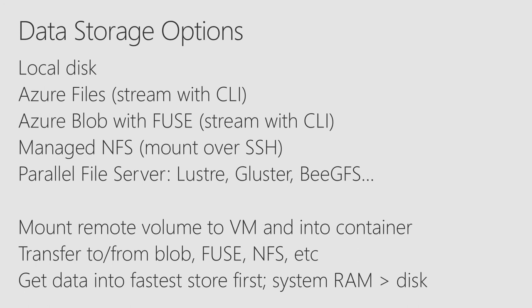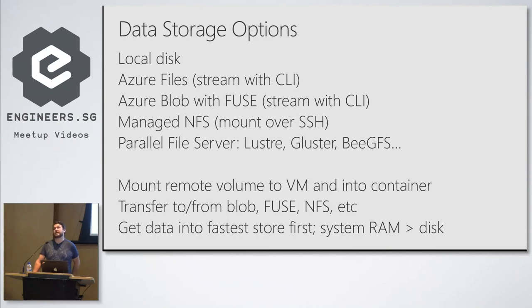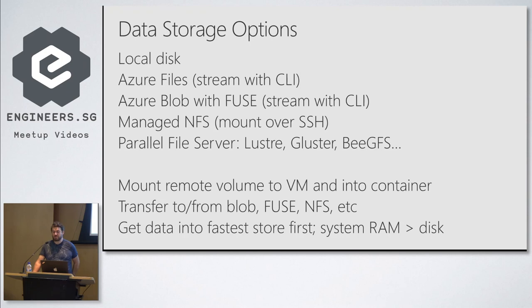I'm a big fan of getting data into the fastest data store first. If I'm training a deep learning model, I am not going to read mini-batches over the network — all you're going to do is choke on file IO and leave your GPU sitting idle. Please pull your data locally, especially if you've got a big machine with lots of RAM. It can actually be a good idea to just pull it and stick it in a RAM disk, because you want to be as optimized as possible for getting data through the CPU or GPU.